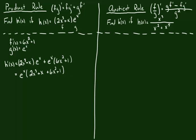Next problem: the quotient rule. This rule is very similar to the product rule. It's assembled by taking the bottom function g, times the derivative of the top function f, minus the top function f times the derivative of the bottom function g, all over the bottom function g squared. In this case, we think of x cubed as our top function f, and x squared plus x to the fifth as our bottom function g. We need the derivative of f and the derivative of g before we can move forward.